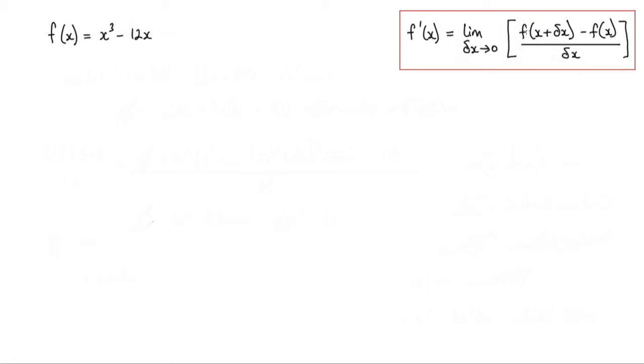Now to start this off I'm just going to take this part here of the limiting process. So f of x plus delta x minus f of x all over delta x. Let's have a look at that. So f of x plus delta x minus f of x and that's all over delta x.